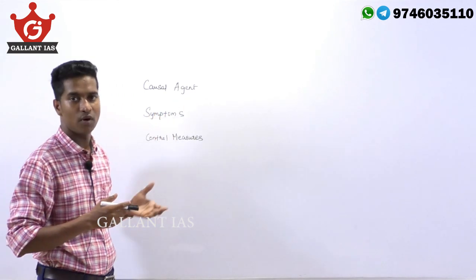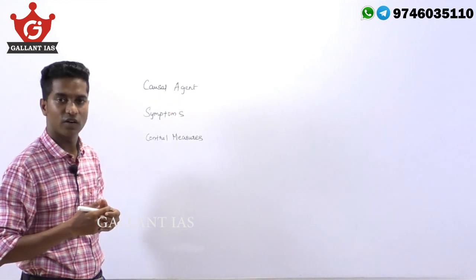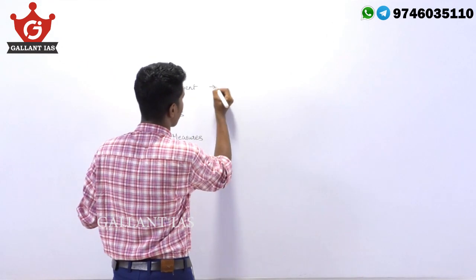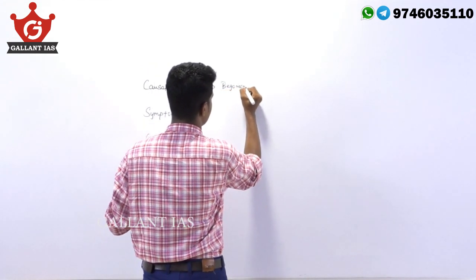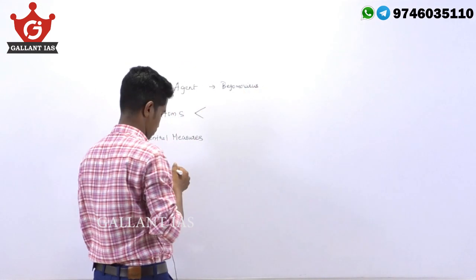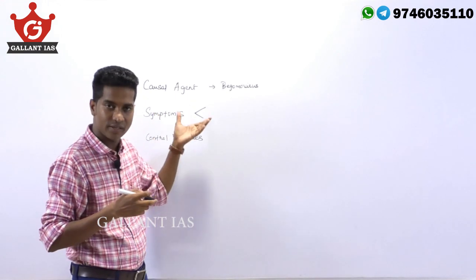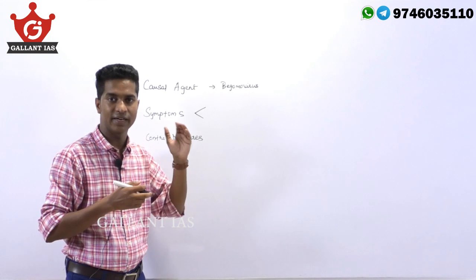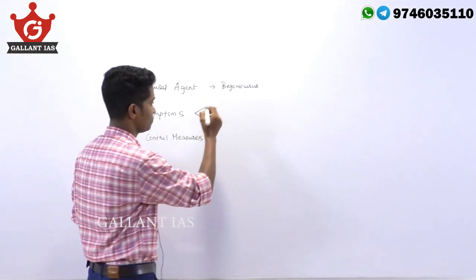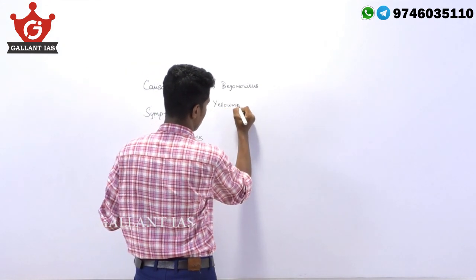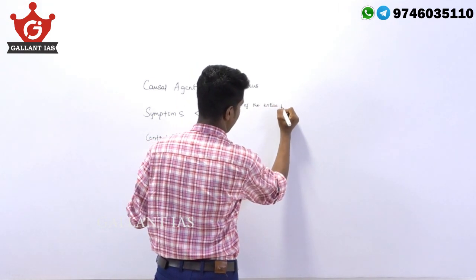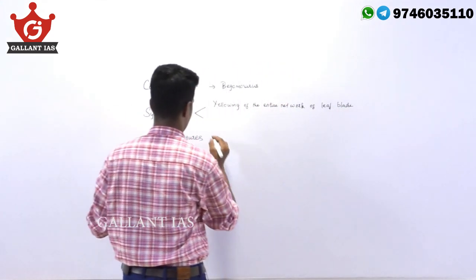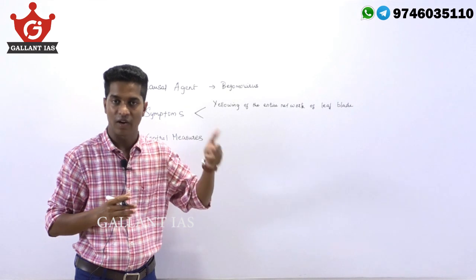In the body part, you have to address all three key points. For yellow vein of okra, the causal agent is Begomovirus — it is a viral disease. The symptoms include yellowing of the entire network of veins of the leaf blade, and infection restricts flowering and fruit formation.